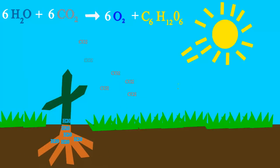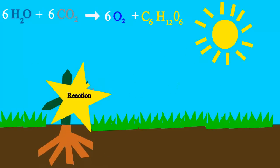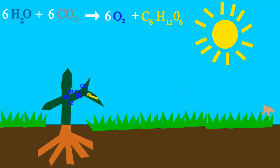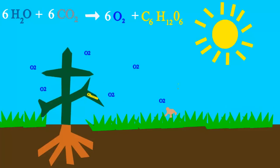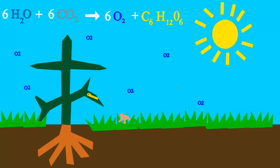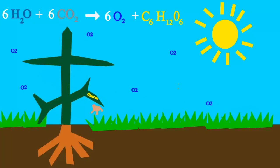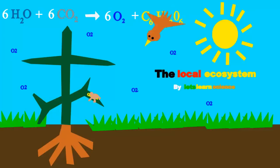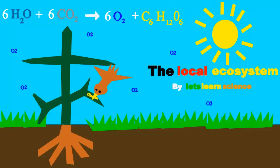Plants take water, sun, and CO2 to make glucose, the sugar that they use for food. They also put oxygen into the air so we can share, because oxygen is everywhere.